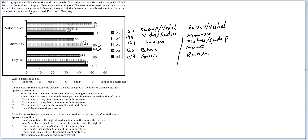We have all the information that could have been possibly understood. Let's get to individual questions. Who is disguised as S3? It could be Himanshu, it could be Vishal, or it could be Sudip. So the answer will be Option D — Cannot be determined.